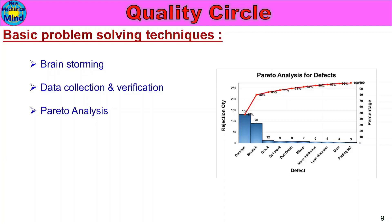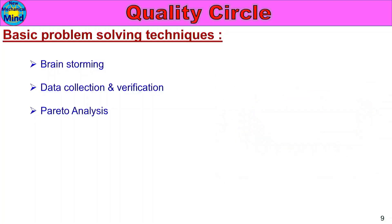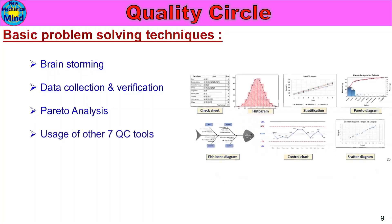Pareto Analysis is used to confirm which defects contribute the most to rejection — to identify which defects are occurring more and which defects contribute to rejection. Pareto analysis is used for this purpose.